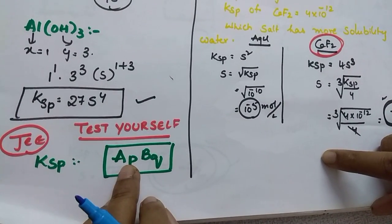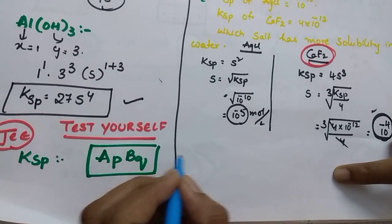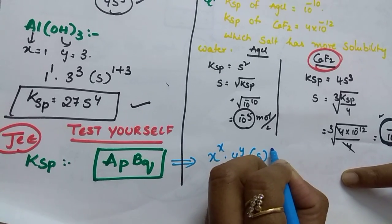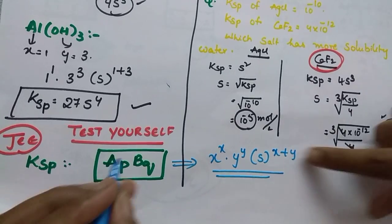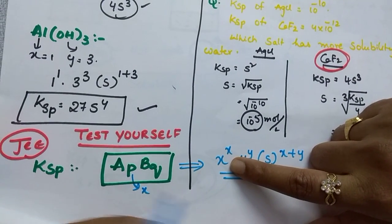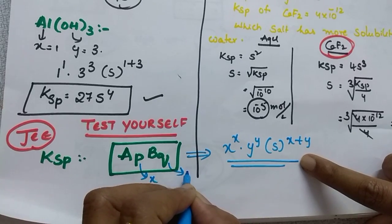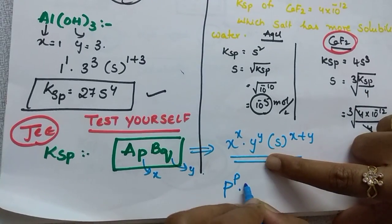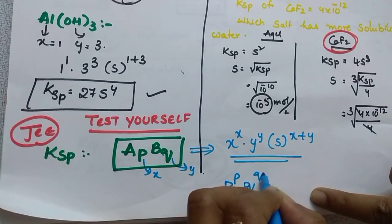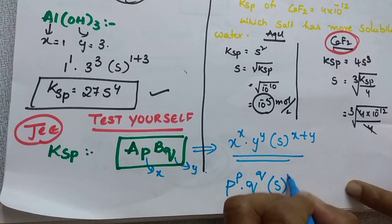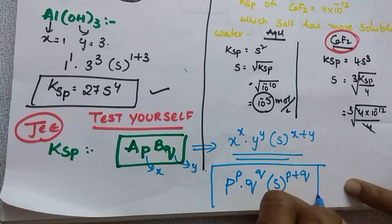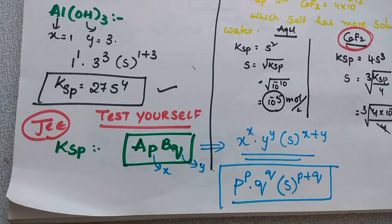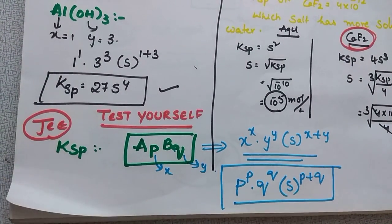The question is: find the Ksp for an A_p B_q salt. The trick formula I gave you is: x^x · y^y · s^(x+y) = Ksp. Here x = p and y = q, so the answer is p^p · q^q · s^(p+q). You can solve it the normal way too — if it dissociates we get p moles of A and q moles of B — but this formula is the easiest method.